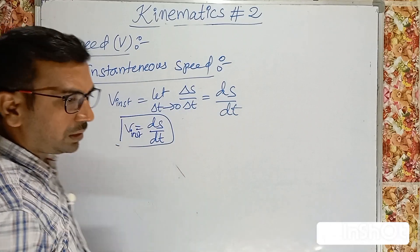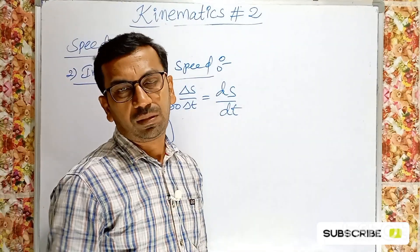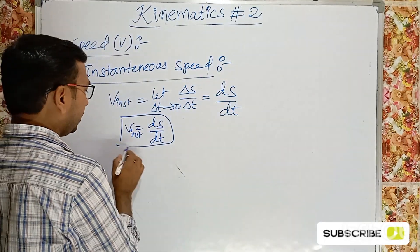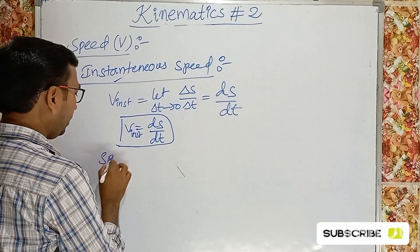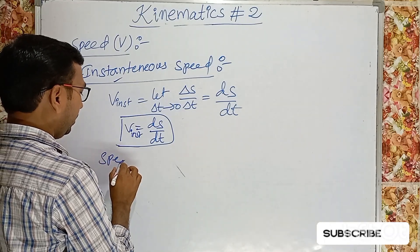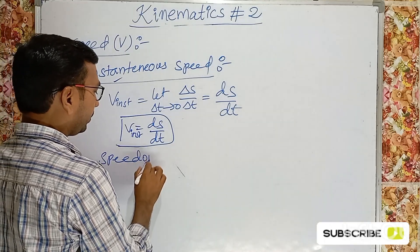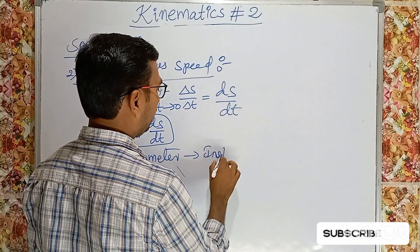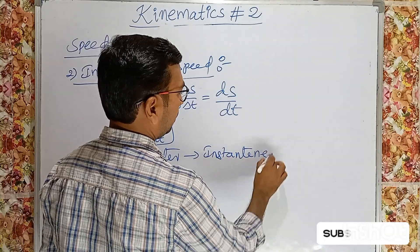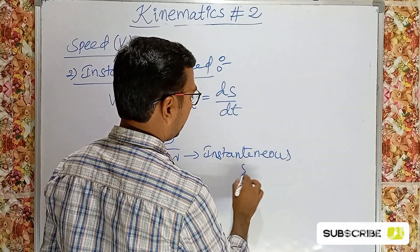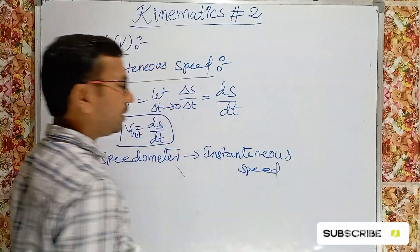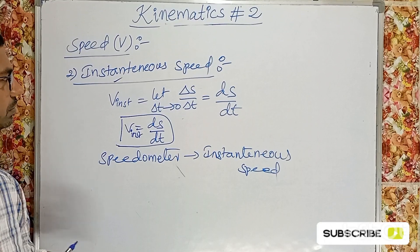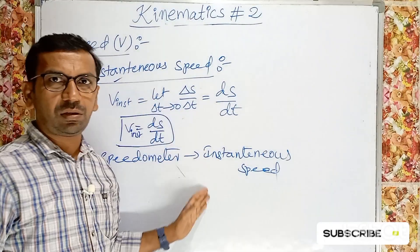For example, the speedometer of a car measures instantaneous speed. Instantaneous speed is also the same as uniform speed at a given instant.